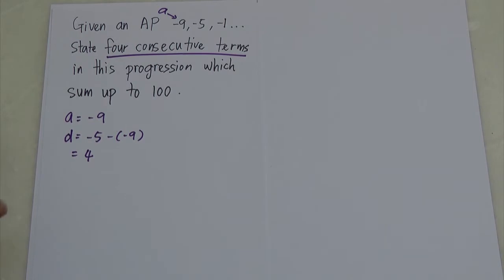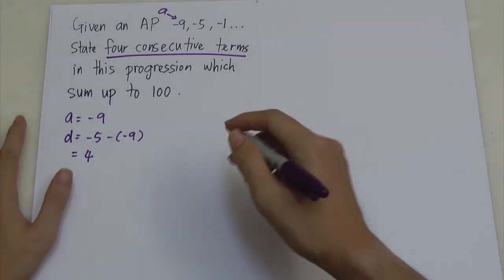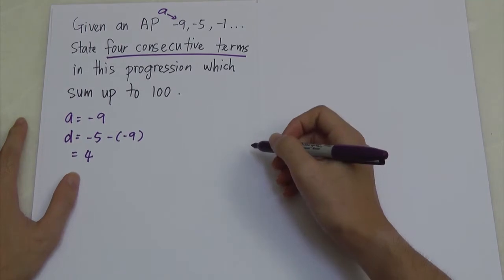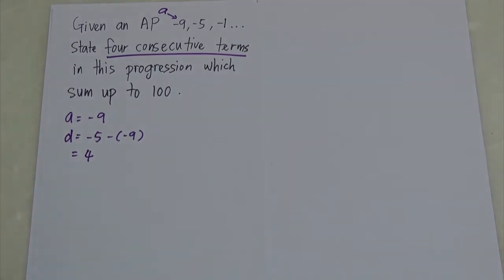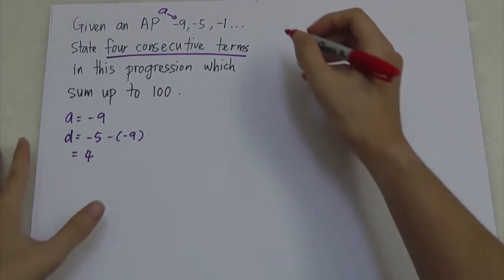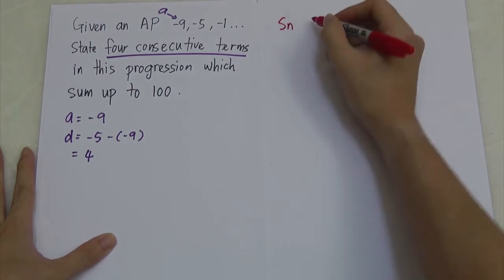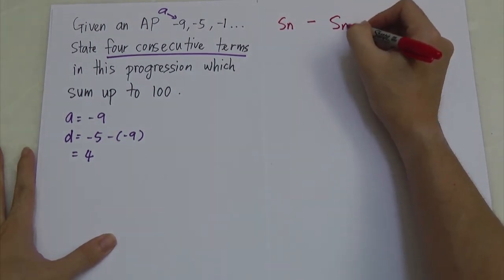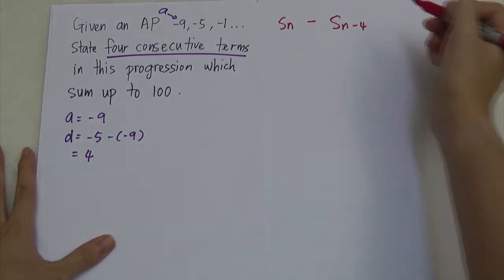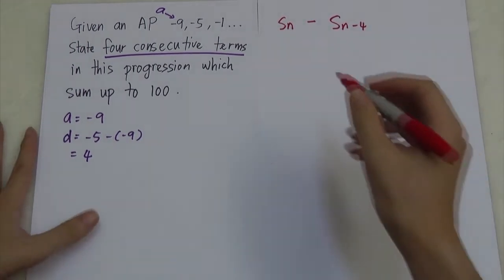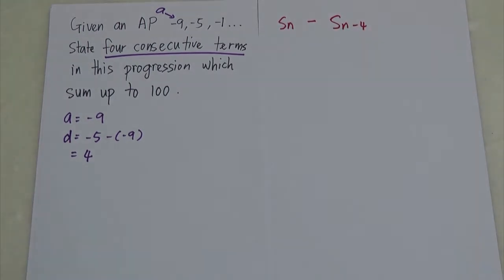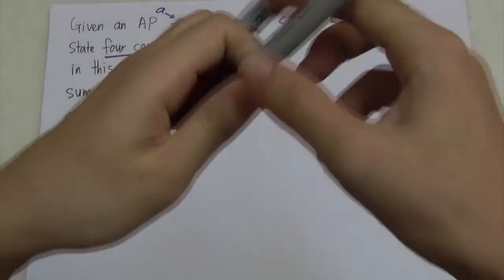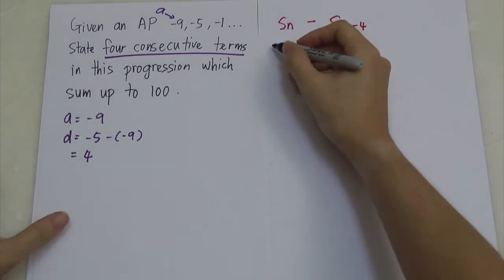For this kind of question you have two methods to solve, but I prefer to use the sum of N terms method. I find it easier, so I'm going to teach you using that method. You must understand a concept like this: if I want to sum up 4 consecutive terms, I can use the method Sn minus S(n minus 4).